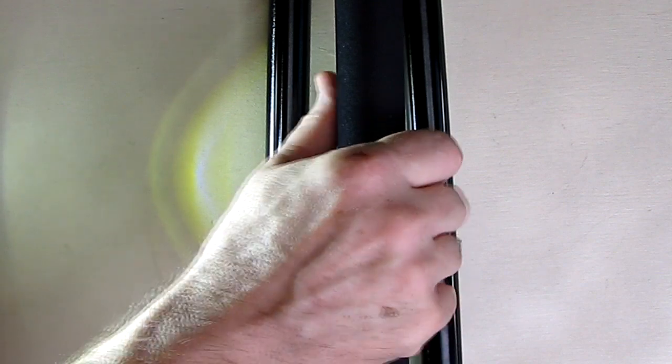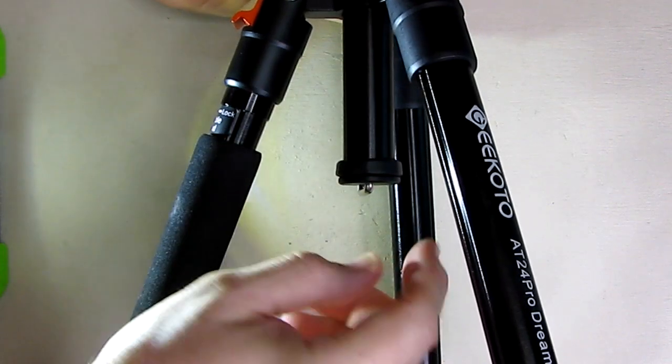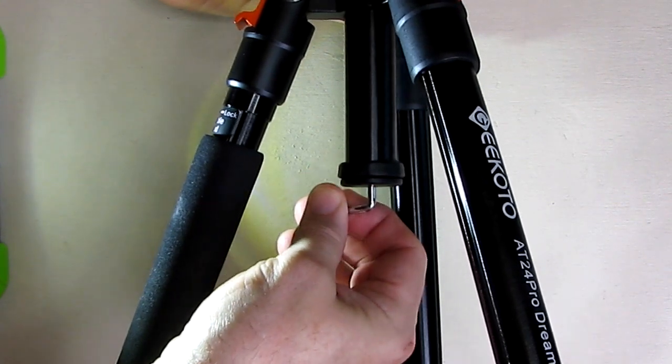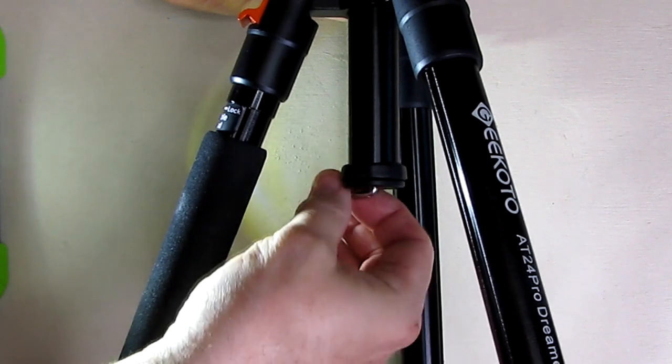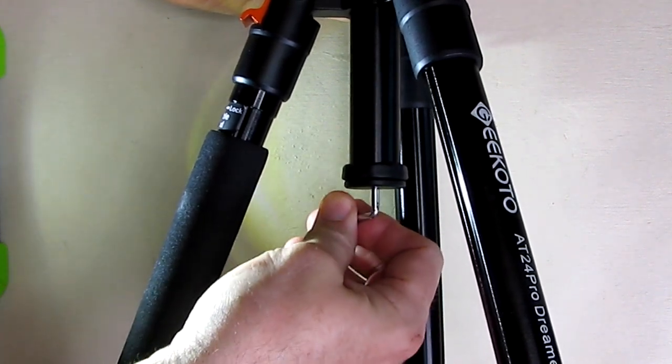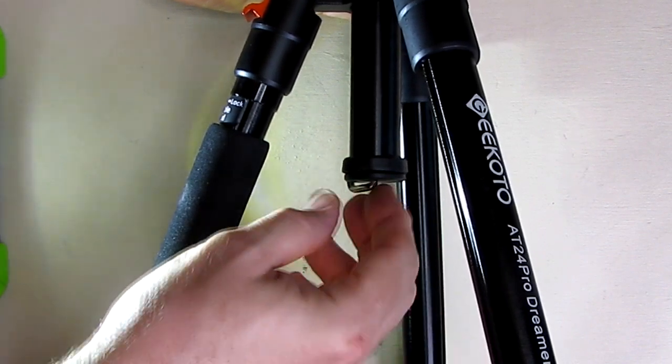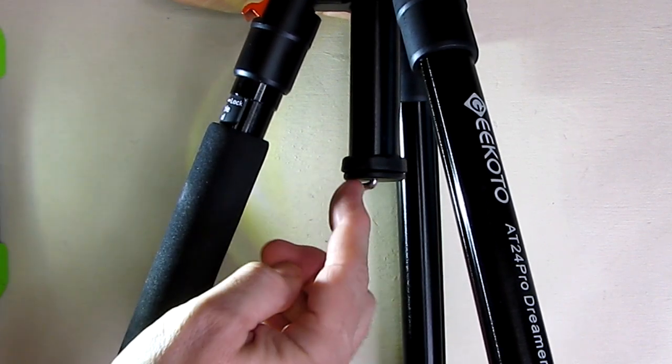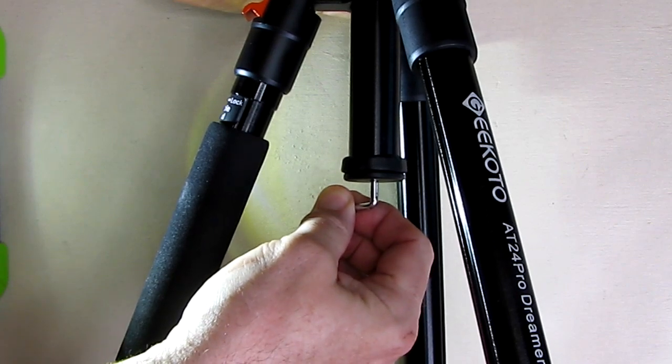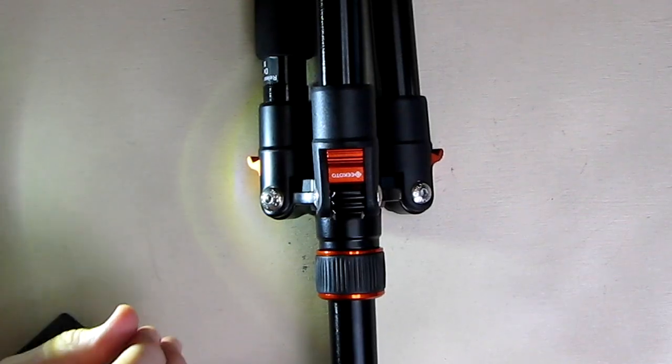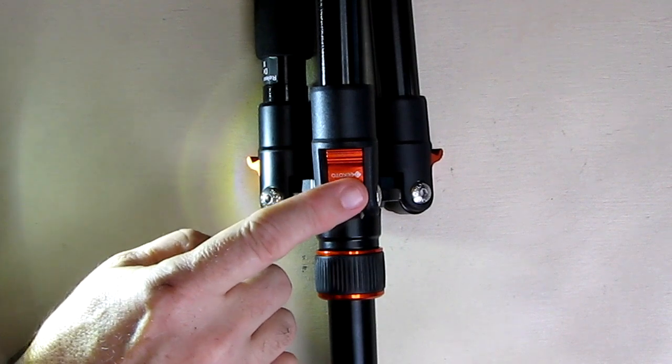On one of the legs, it has this nice rubberized piece so that if you want to hold it from here, you can hold it without any fatigue on your hand. On the bottom center of the tripod there is a spring-loaded stainless steel hook. You could add weight to the tripod to get more stability by adding weight to the base. That's really nice quality and a handy feature to have.